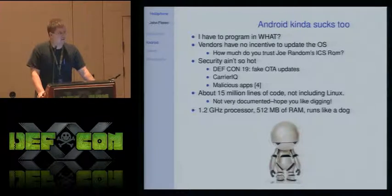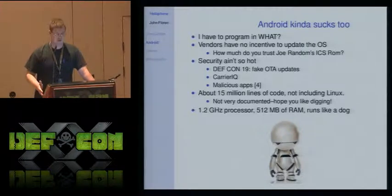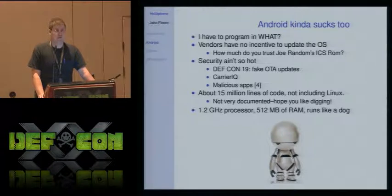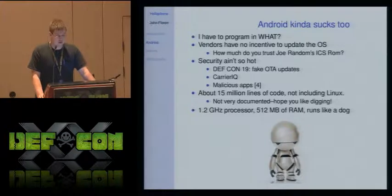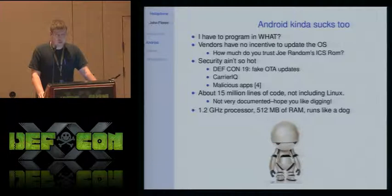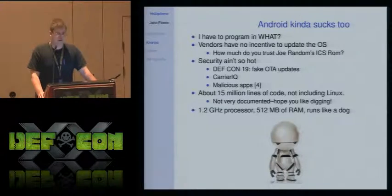But then you realize there's 15 million lines of code just in Android — not including the Linux kernel, which has another 15 million lines. As we discovered over the course of this project, it's just not exceptionally well documented. You have to jump around a lot of places in the source tree. It's piles and piles of Java interlinking with C++ programs which link back to Java. It's quite confusing for one person — or even a small team — to take in and understand. And my phone, a 1.2 GHz processor with 512 MB of RAM, still runs like a dog.